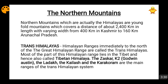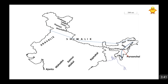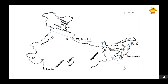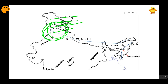Parts of the Trans-Himalayan system in India include the Zaskar, K2 Godwin Austin, the Ladakh range, Kailash range, and Karakoram range. The order of these mountain ranges from top is: Karakoram range, then Ladakh, then Zaskar, then Pir Panjal and Dhauladhar. Pir Panjal and Dhauladhar are not even in the greater Himalayan range — they are below that.